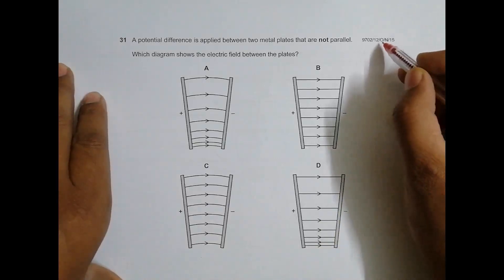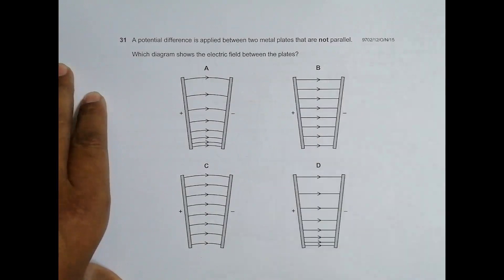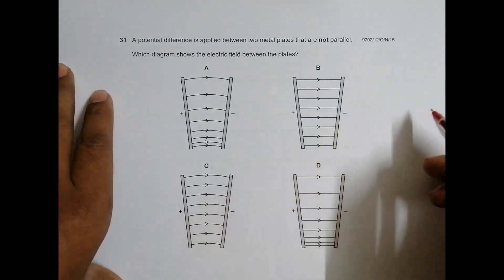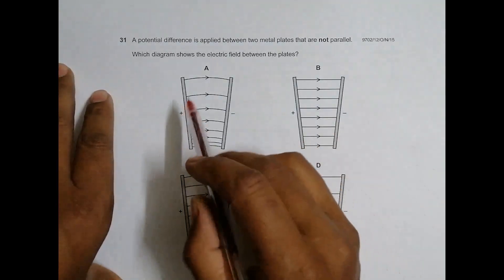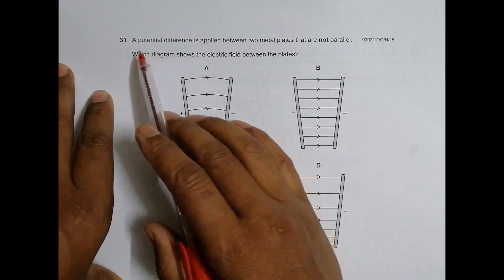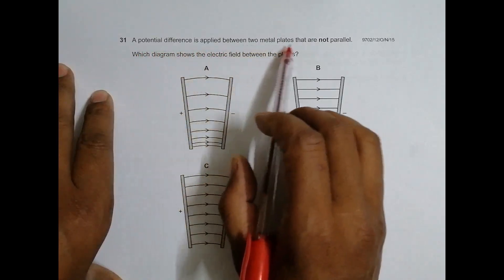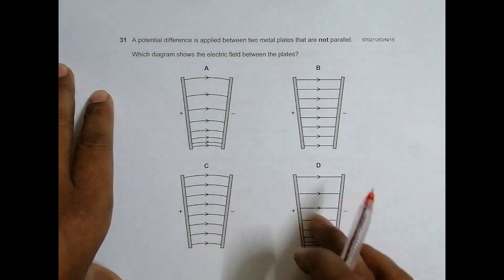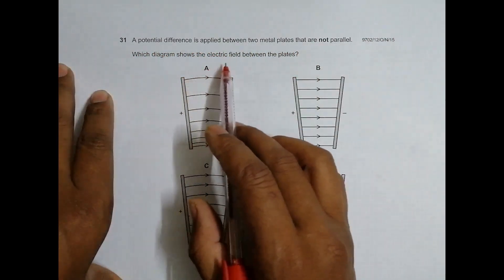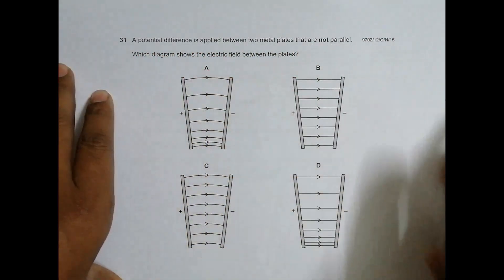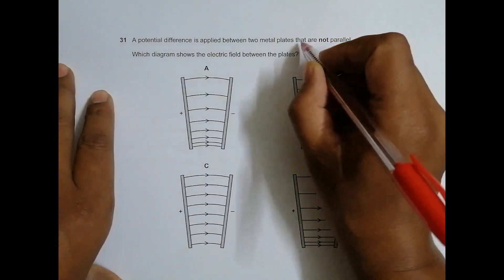Hello folks, this is 2015 October November paper 1-2, question number 31 from the chapter on electric fields. The question states: a potential difference is applied between two metal plates that are not parallel. Which diagram shows the electric field between the plates? Since it has been clearly stated that they are not parallel...